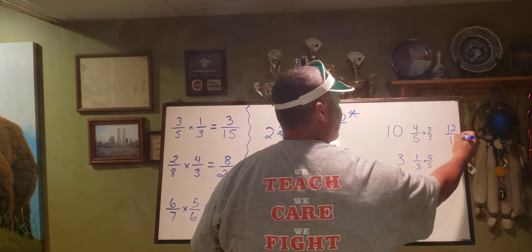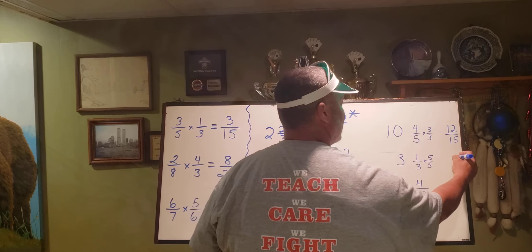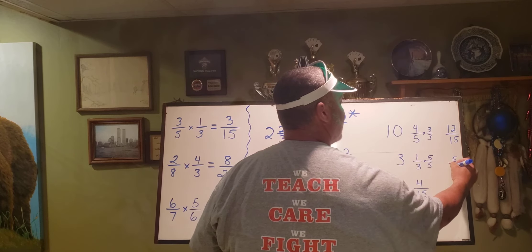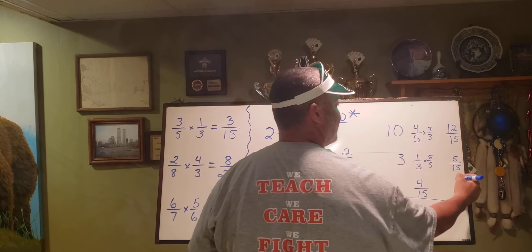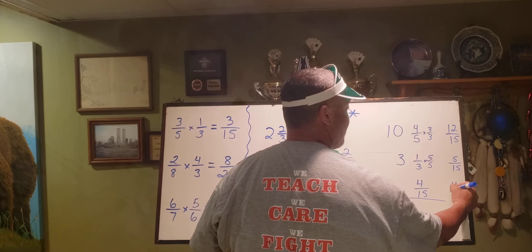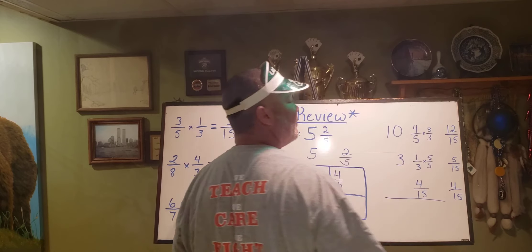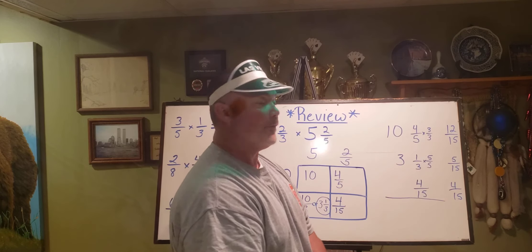twelve fifteenths, five fifteenths. One times five is five, three times five is fifteen. And I can just keep my four fifteenths. And now I have a common denominator for all three.